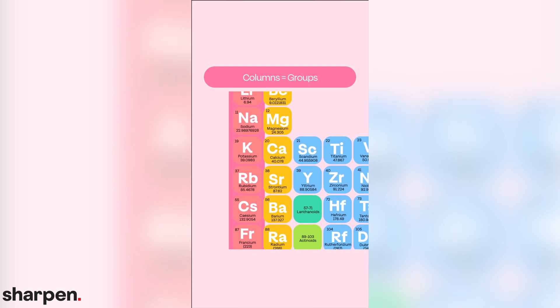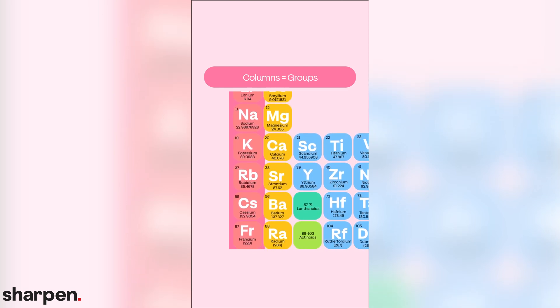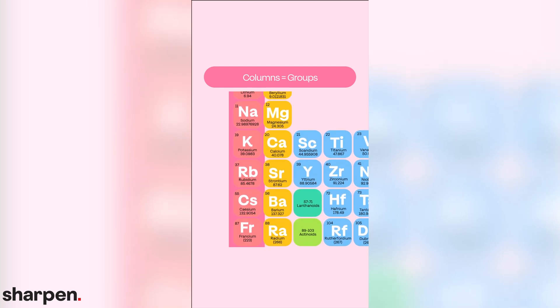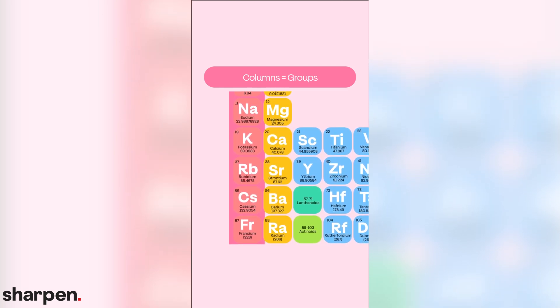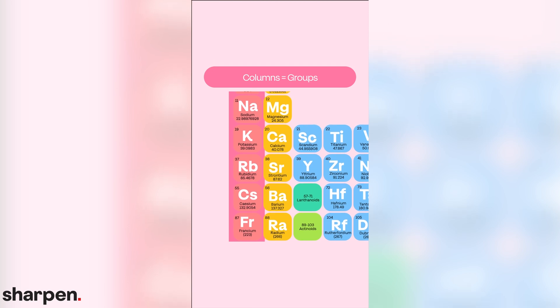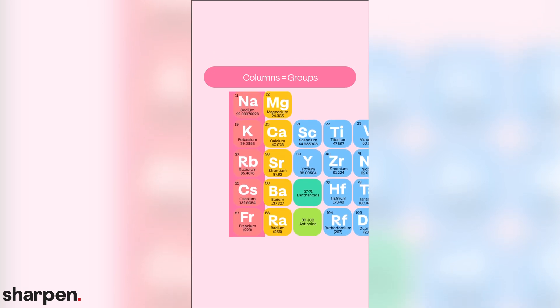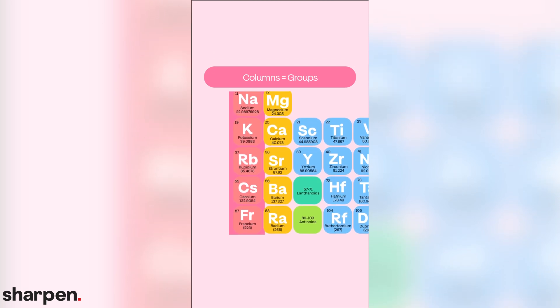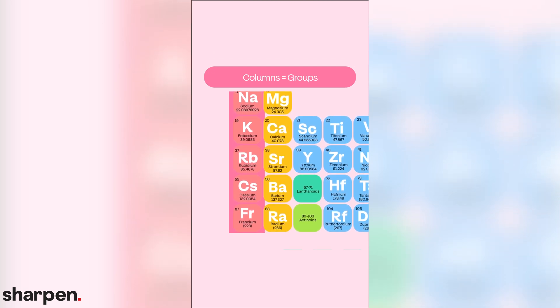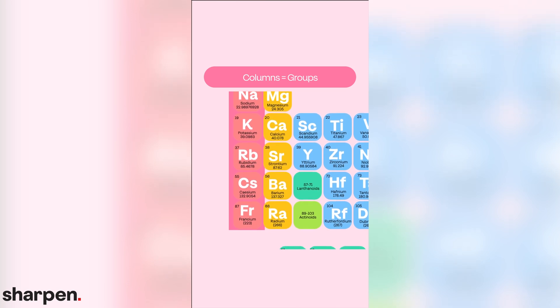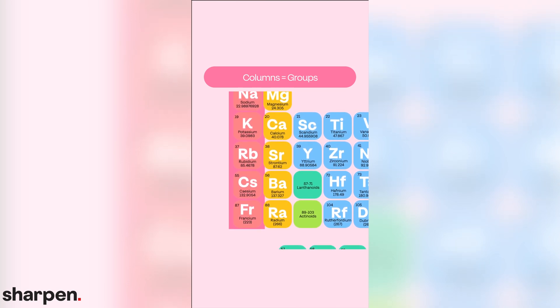Let's look at neon for example. It's to the very right on the second row, or period. Its group number is 8A, which means that there are eight valence electrons in neon.